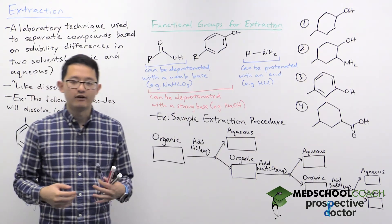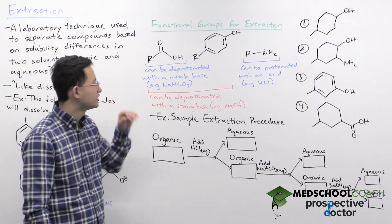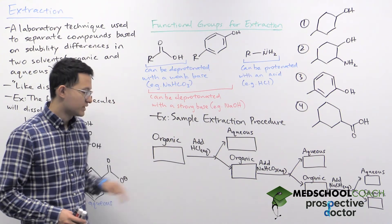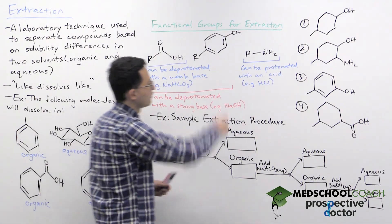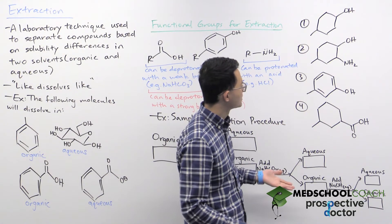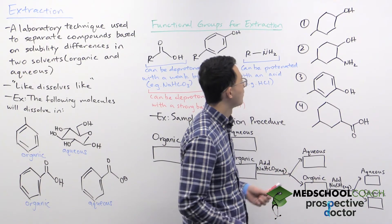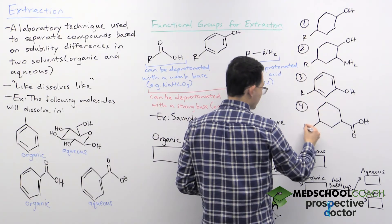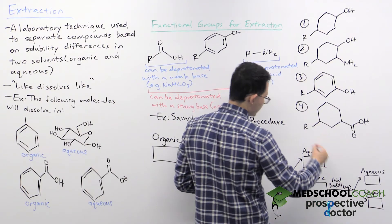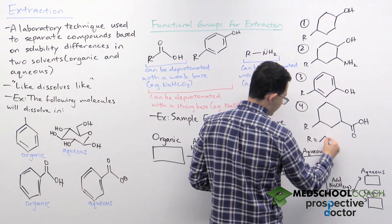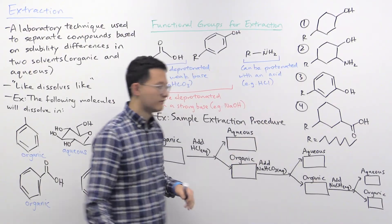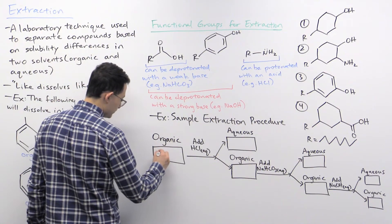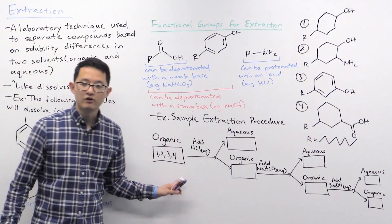Let's look at an example extraction procedure where we want to separate four molecules. We're starting with the organic layer because all four molecules are largely nonpolar — if there's an R group, it can be a chain of carbon atoms, making these molecules not very soluble in aqueous solvent. So molecules 1, 2, 3, and 4 would all dissolve in an organic solvent.